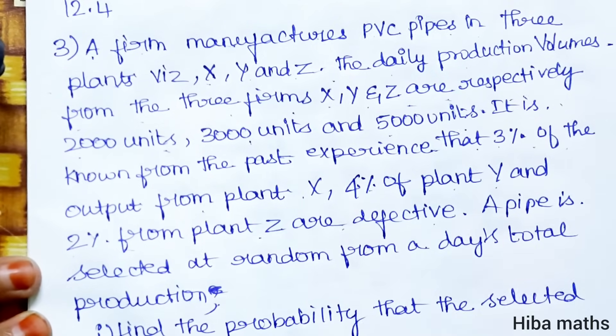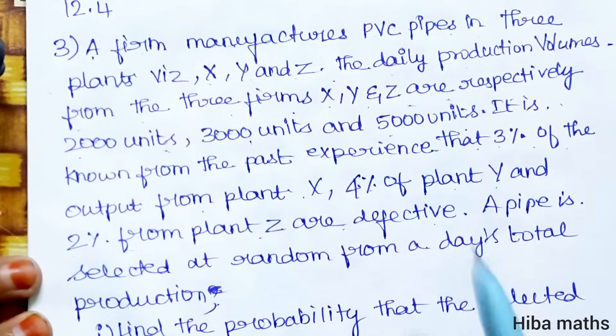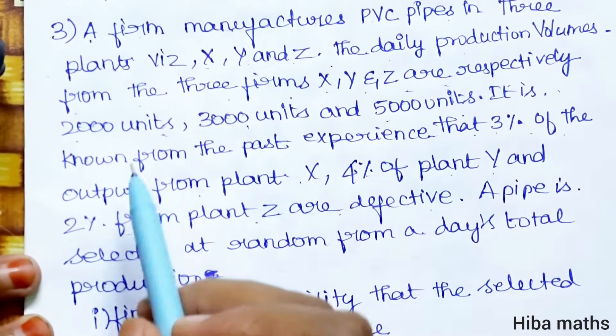One company has PVC pipe manufacture in 3 plants X, Y, Z. X has 2,000 units, Y has 3,000 units, Z has 5,000 units.